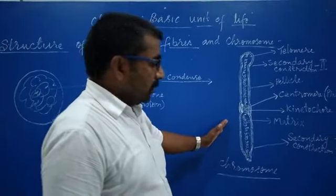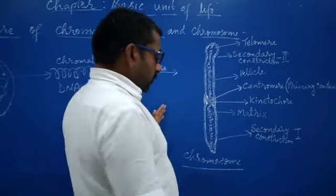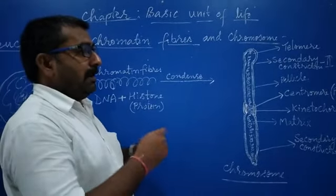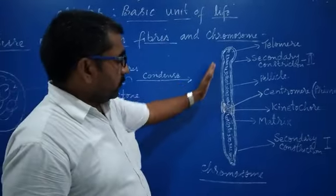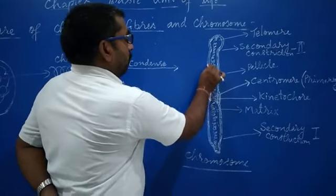Now here I have shown you the chromosome, a single chromosome. I told you that chromatin fibers are highly fine thread-like, highly coiled structures. So here I have shown you the diagram of chromosome. Now you can see the outer boundary.